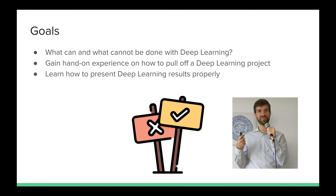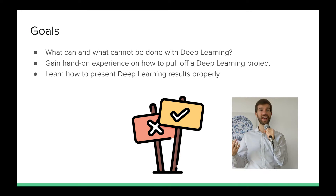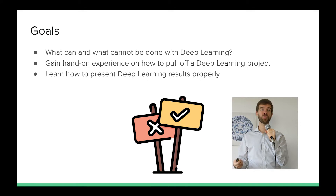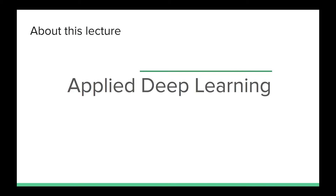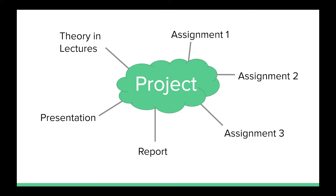The goals of this course are to learn what you can and cannot do with deep learning. To get the best understanding of this, you will be doing a project and gaining hands-on experience on how to pull off an actual deep learning project on your own. And last but not least, once you've done this, you will learn how to present your results in a proper way — because it's good to get good results, but it's hard to communicate if you can't show anyone what you actually did. This course is called Applied Deep Learning for a reason: you will do most of the work.